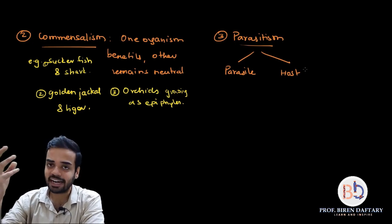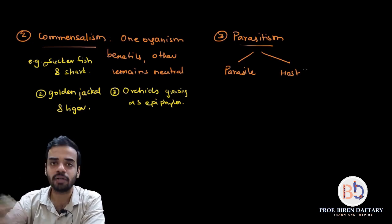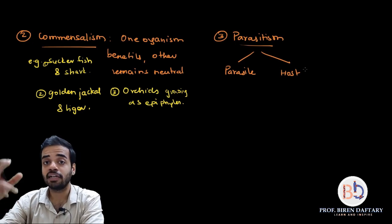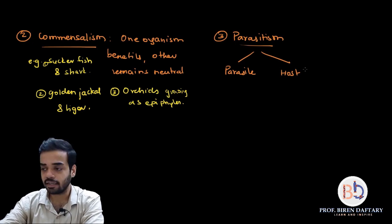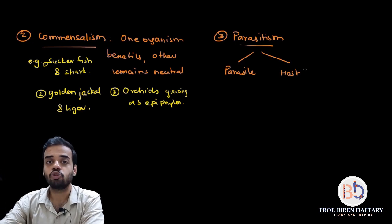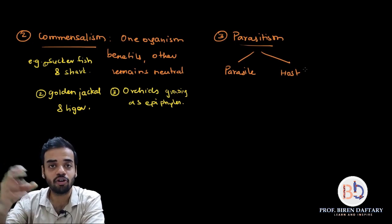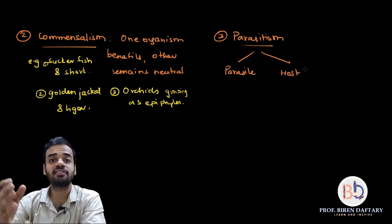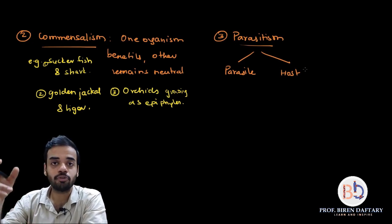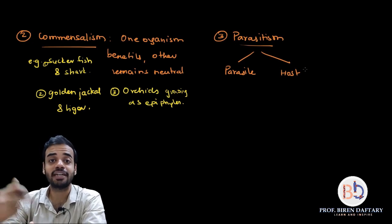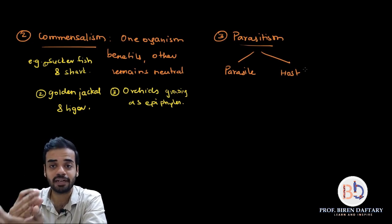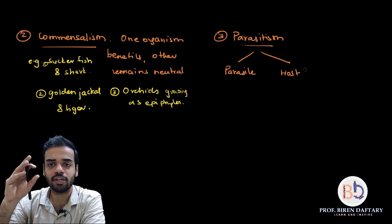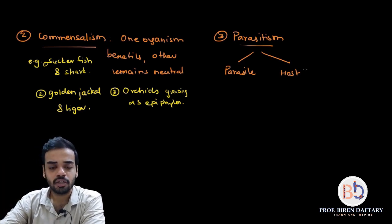Many examples of parasitism can be given. Any microorganism which enters your body and causes disease is a parasite — it gets food and survives inside your body while causing damage to you. For example, Plasmodium causes malaria and destroys the red blood cells (RBCs). Plasmodium is the parasite and humans are the host. Another example is the mosquito, which feeds on your blood — it is benefited while we are harmed. Again, we are the host and the mosquito is the parasite.